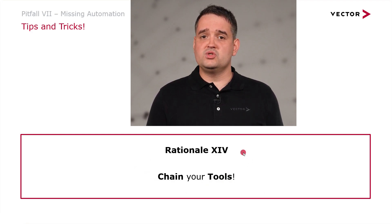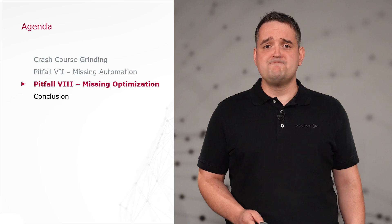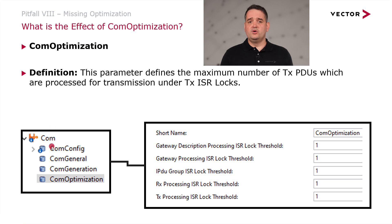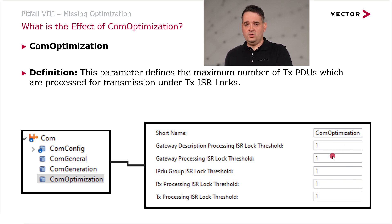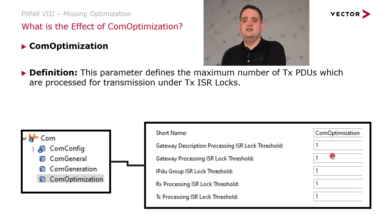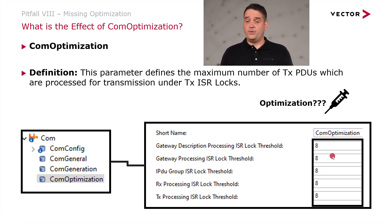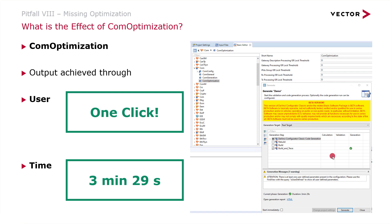Before you even start your project, make sure — as rationale number 14 — you chain your tools together. What can we optimize in the system? I brought a famous example: within the COM module there is the COM optimization container. Simply defined, this number is the amount of PDUs processed during one interrupt lock. If set to one, interrupts are locked for processing each PDU individually. If set to eight, you lock the interrupt, process eight PDUs, and then release the interrupts again. The question is: if we set this to eight, is it actually an optimization or not? The result for the entire toolchain was only one click — I pressed the generate button, the built-in trace toolchain executed automatically, no further user interaction required.